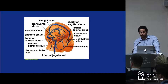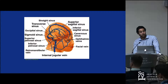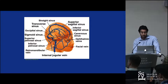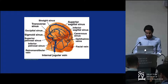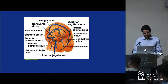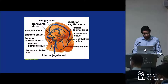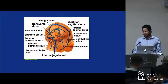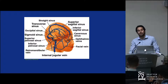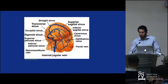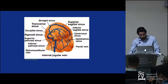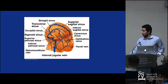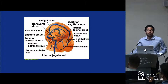Of the unpaired sinuses, the biggest one is the superior sagittal sinus — it is the largest sinus of the human skull. It runs in a sagittal plane from the anterior aspect of the skull, right at the falx at the crista galli, all the way along the midline sagittal line towards the confluence of the sinuses in the occipital bone.